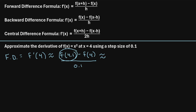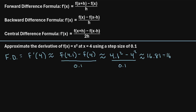So this is approximately equal to: if we evaluate f at 4.1, we plug 4.1 into the formula for x, we get 4.1 squared. So we have 4.1 squared minus f of 4, which is 4 squared, divided by 0.1. So 4.1 squared is about 16.81, minus 4 squared which is 16, divided by 0.1. When you punch this into a calculator, it comes out to 8.1.